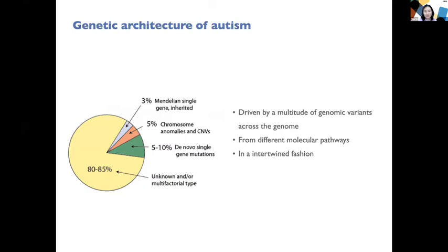We now understand that autism is driven by a multitude of genomic variants across the genome. It's not influenced by individual genes; it's more likely the outcome of a large number of genes that interact with each other. Those genomic variants can come from different molecular pathways and interact in a really complex fashion. The research challenge is: how can we identify those large numbers of genes associated with autism?